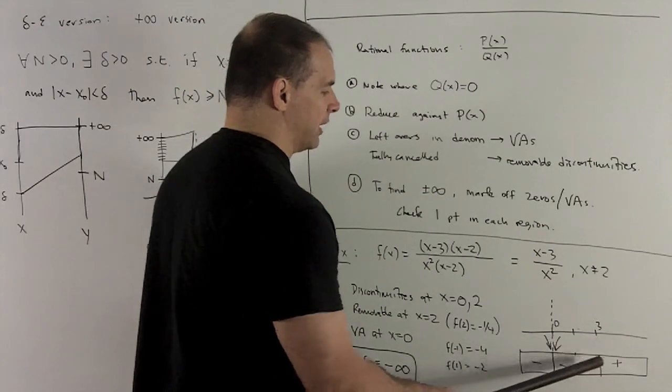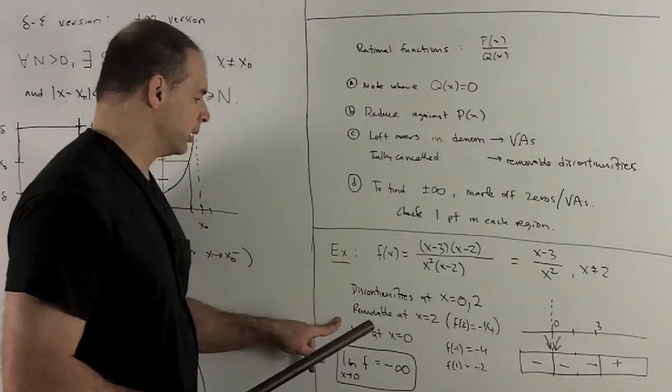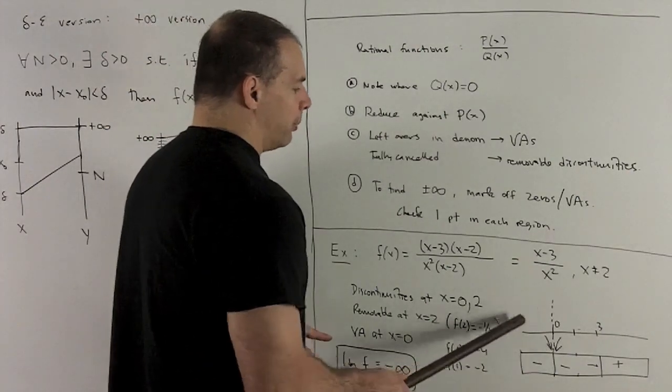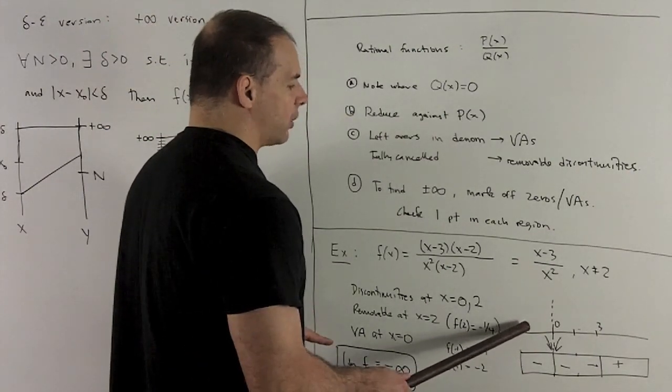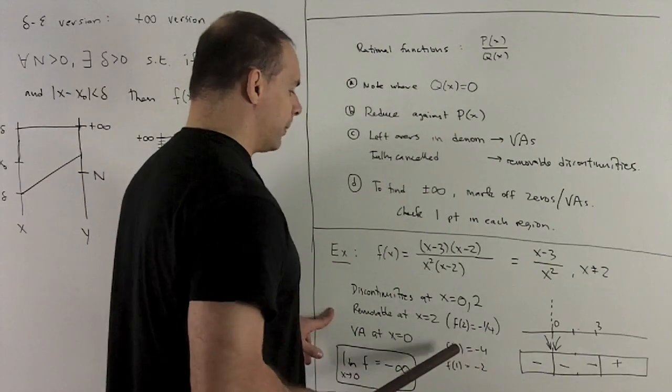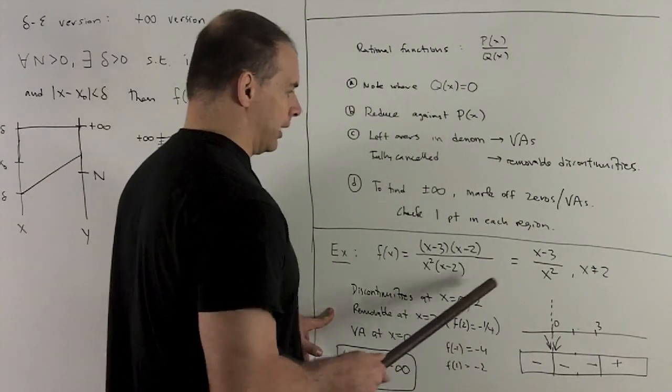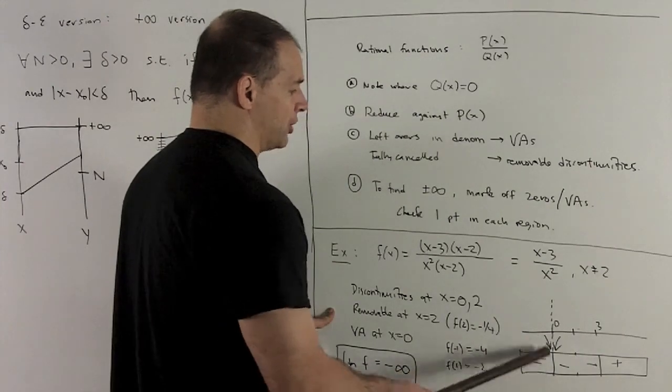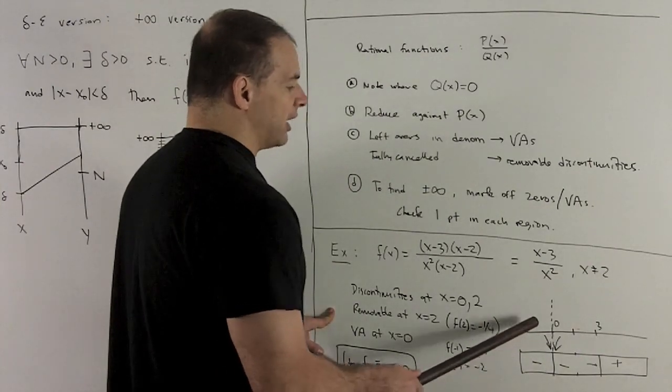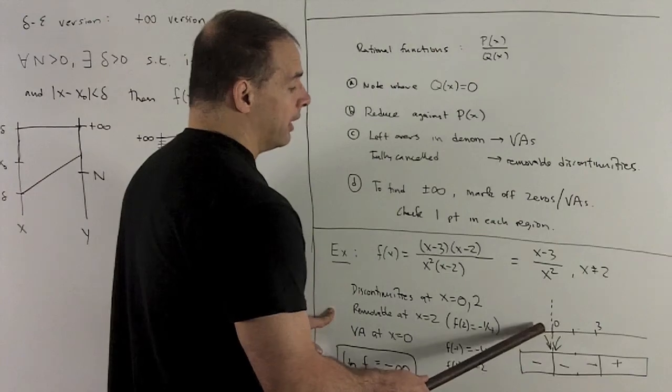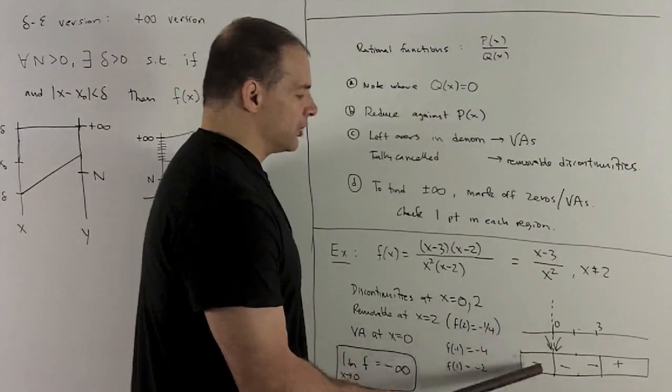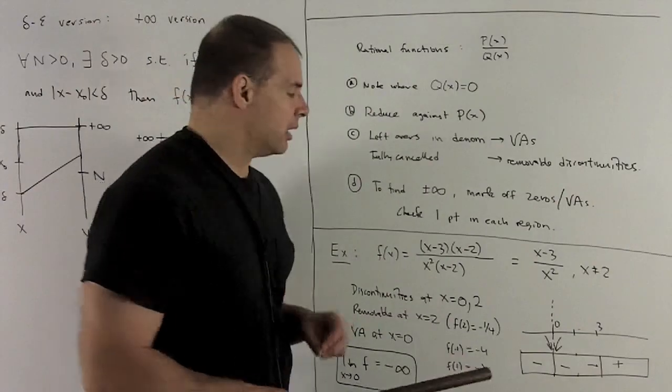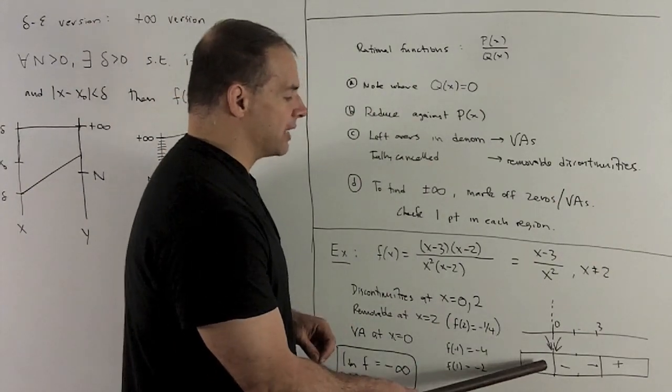So on this region here, I just need to check one point. So if I'm on this side of 0, I can check minus 1. If I put minus 1 in there, I'm going to get a minus 4. So it's going to be negative on this entire region on this side. So that's going to give me if I'm on this side. If all of these are negative, and we know that thing's gone to either plus or minus infinity, it has to go to minus infinity. So the one-sided limit on this side is minus infinity.